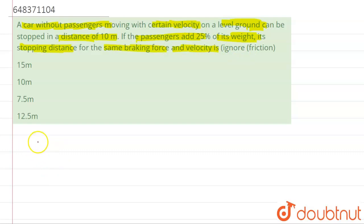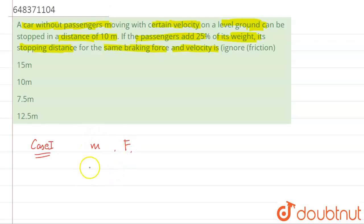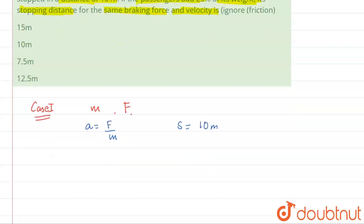We have to find the stopping distance. For Case 1, let's suppose there is a mass m and force f is acting on the body. The acceleration will be f by m, and the value of s is 10 meters.